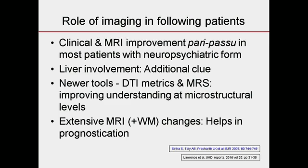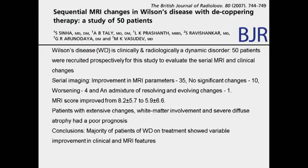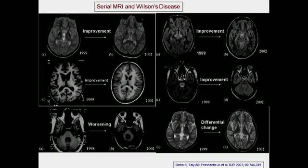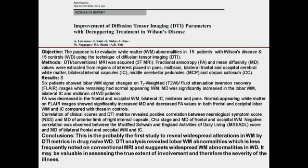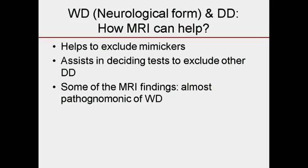We did a sequential study of 50 patients and found that in the majority, MRI improves along with clinical improvement. In some there is worsening, and clinical worsening correlates with MRI worsening. Another paper showed DTI parameters improved with treatment. MRI also helps to exclude mimickers in addition to assisting in deciding tests to exclude other differentials.